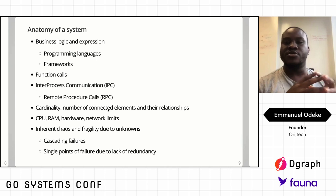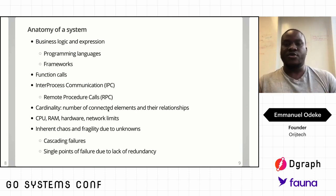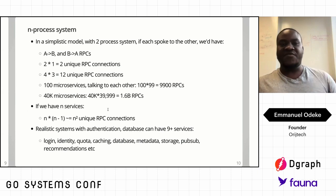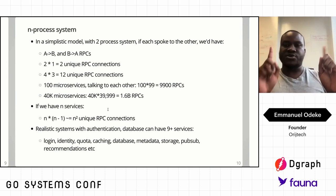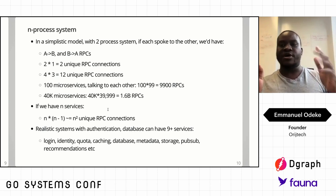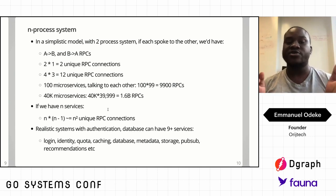When components talk to each other, the result is called the cardinality — the number of connected elements and their relationships. Every system has CPU, RAM, hardware, and network limits. If you have two processes, that's 2 RPCs. If four, that's 4×3 = 12 unique RPCs. If 100, it comes to 9,900. And if it's 40,000 microservices, that value reaches 1.6 billion RPCs. If we have N services and they all talk to each other, that's N×(N−1) RPCs.